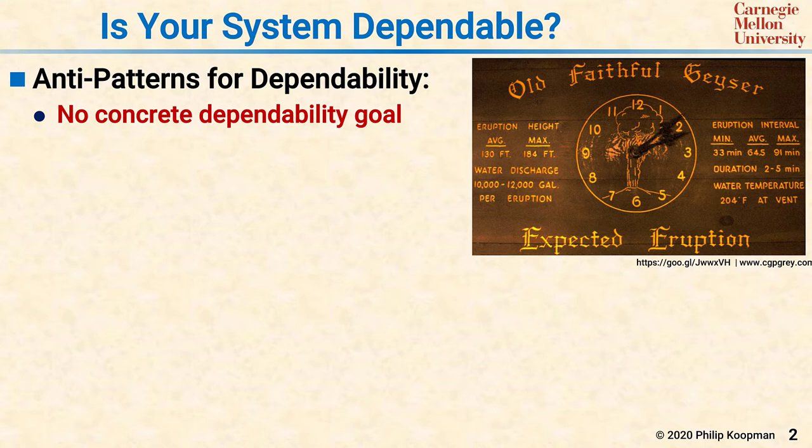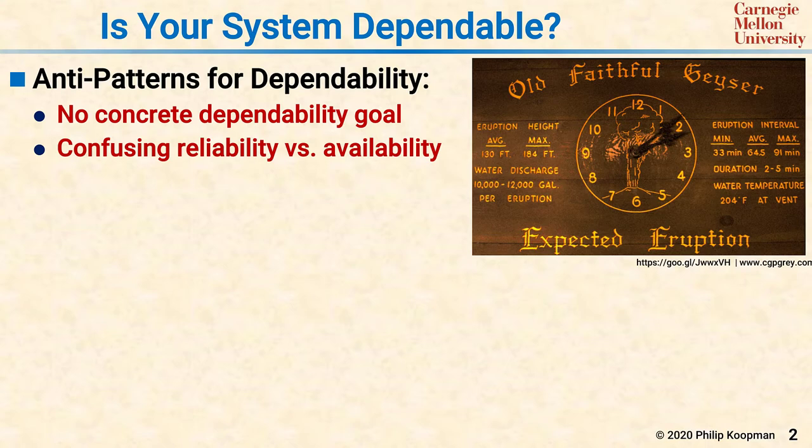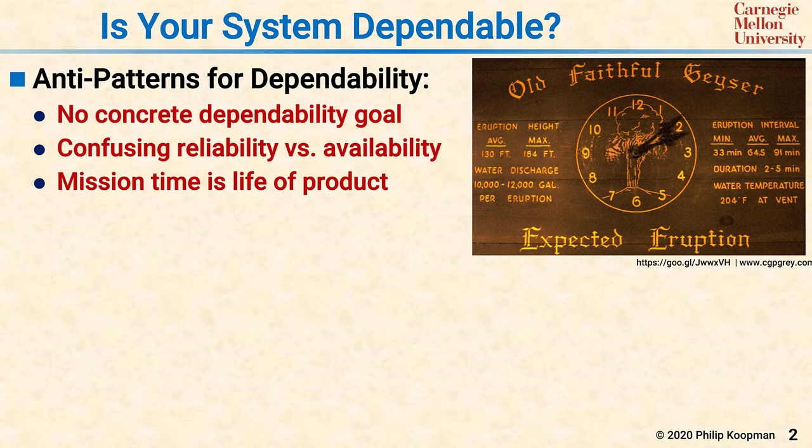That's because if it's not written down, probably you won't get it. You might also have a problem if your dependability approach confuses the quite different concepts of a reliability-type system versus an availability-type system. And finally, you probably have a dependability problem if the effective mission time for a critical subsystem is the life of the product instead of something more like a few hours or a few days of operation.